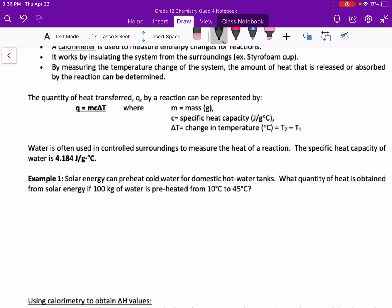In this question we have a mass of 100 kilograms. To convert this into grams, we know that for every one kilogram we have 1000 grams, which gives us 100,000 grams.